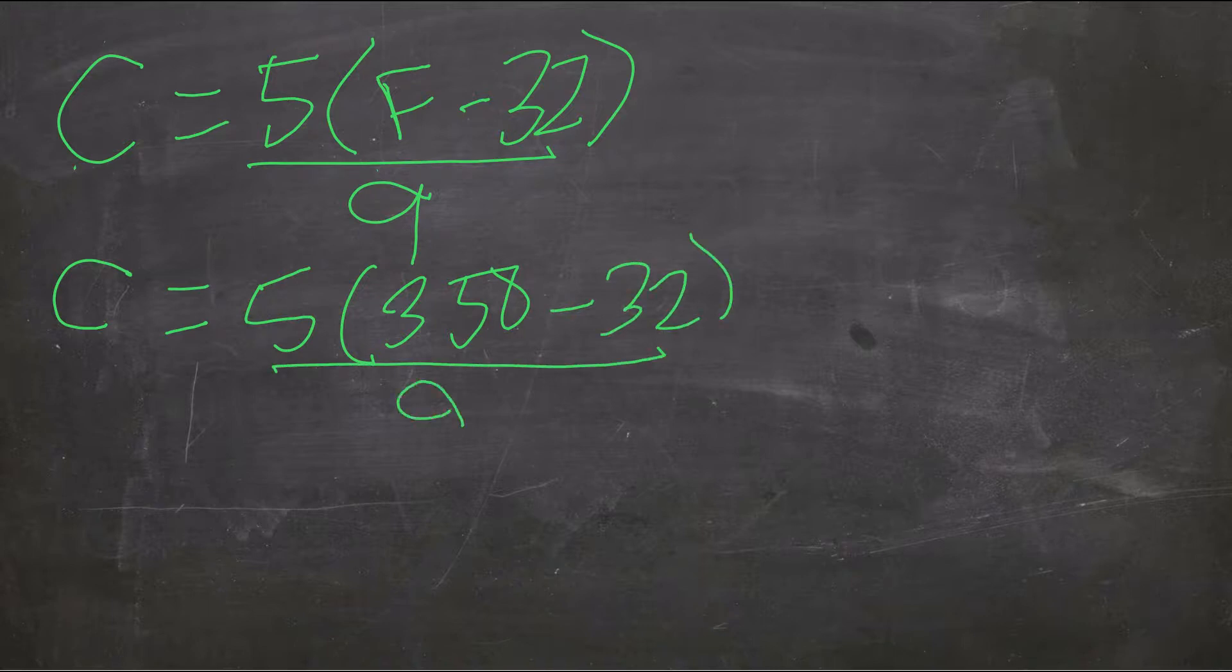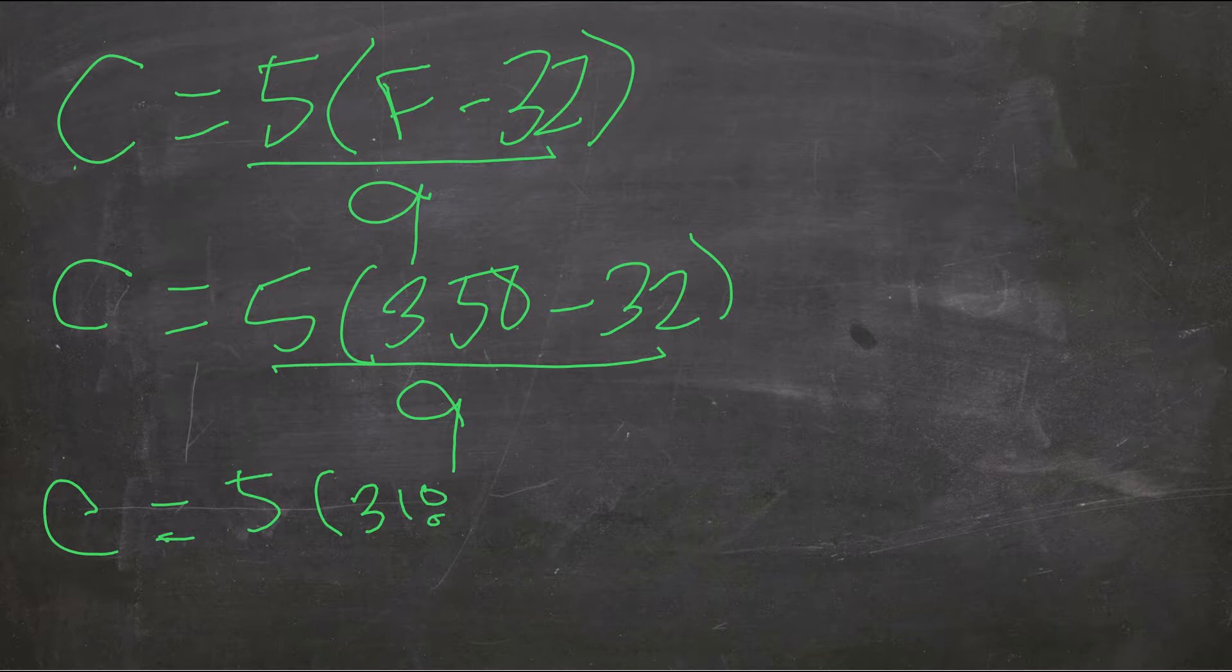Once we plug in our value, we are going to start by using the order of operations to simplify. First I'm going to simplify what's inside the parentheses. So I get 350 minus 32. Then I get 5 times 318, and that's still going to be divided by 9.